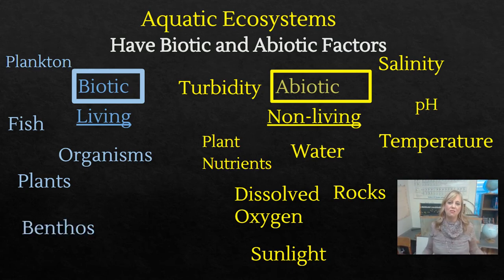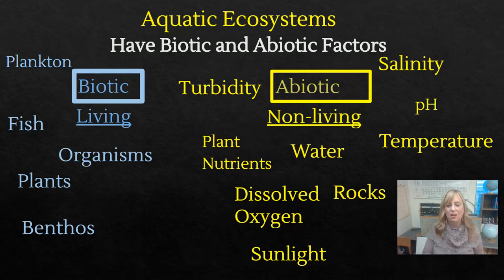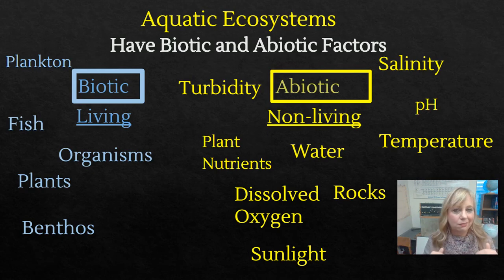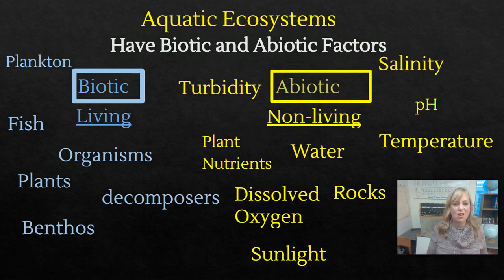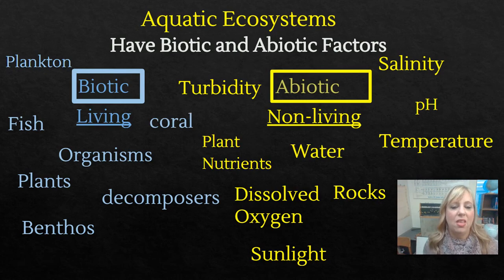Benthos are fancy for our bottom dwellers — things on the very bottom of the floor. They have a crucial role in the rest of the system, and a lot of times they are indicators of whether the water quality is good or not. Decomposers come along to take care of all the things that die in the water. Then we also have things like coral and sponges.